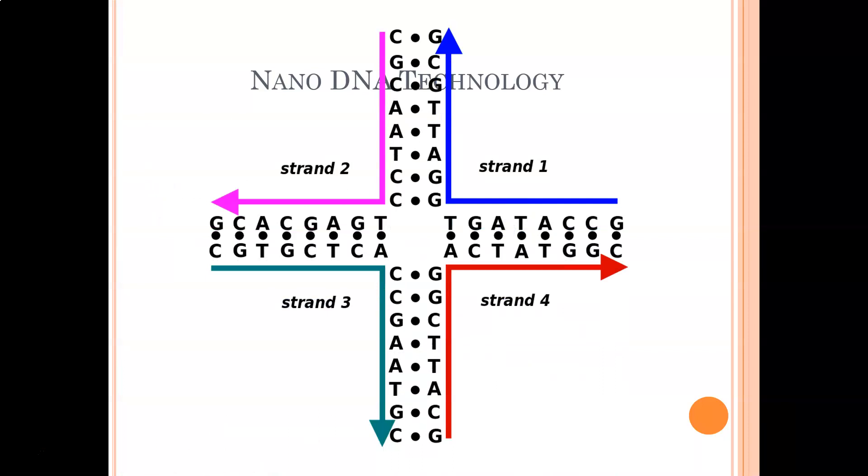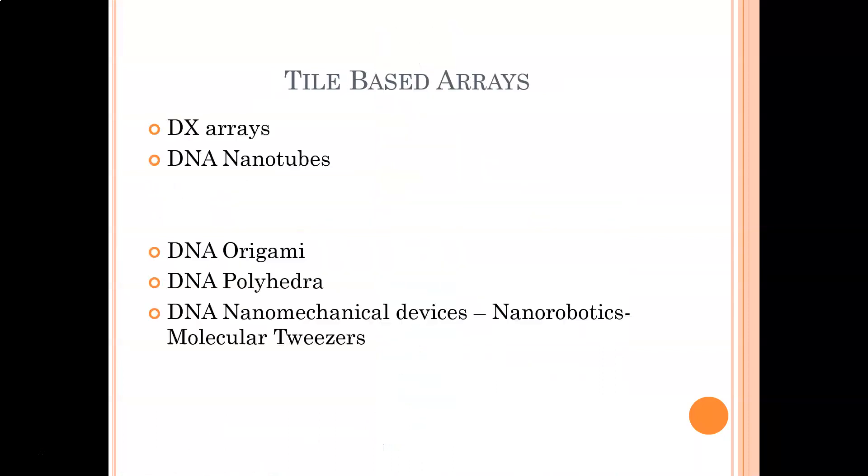So here we are trying to show the structure of the four-arm junction. Now the tile-based arrays, they are called the DX molecules. They can be equipped with sticky ends in order to combine them into a two-dimensional periodic lattice.